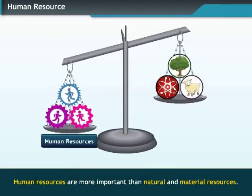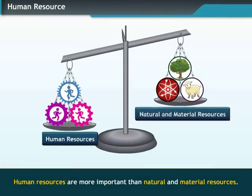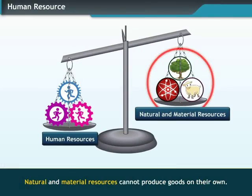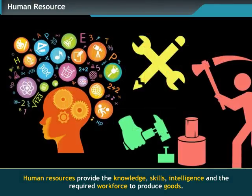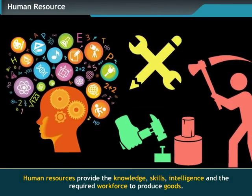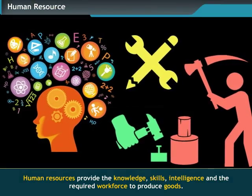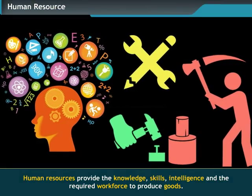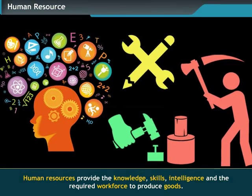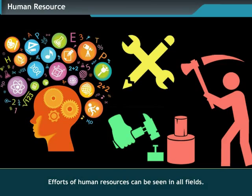Human resources are of greater importance when compared to natural and material resources. Natural and material resources cannot produce goods on their own. Human resources provide the knowledge, skills, intelligence and the required workforce to produce goods. Efforts of human resources can be seen in all fields.